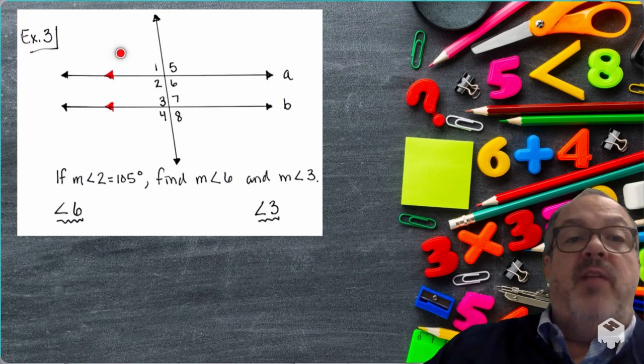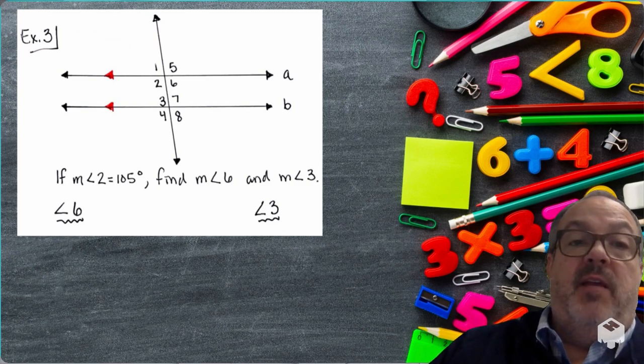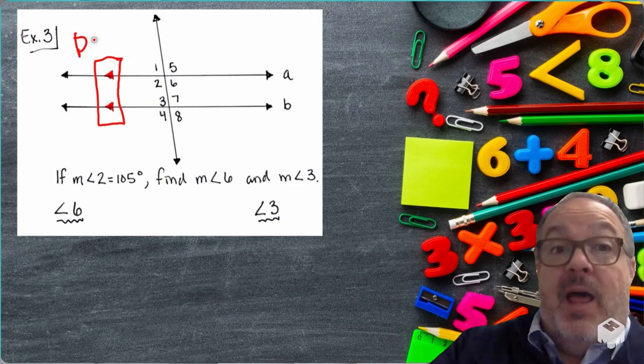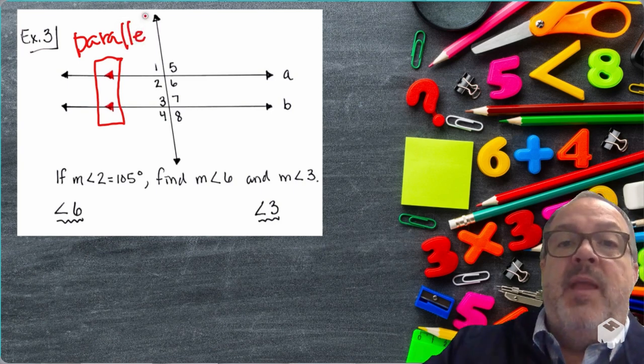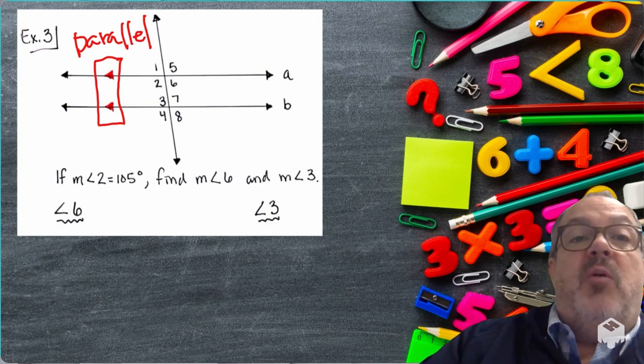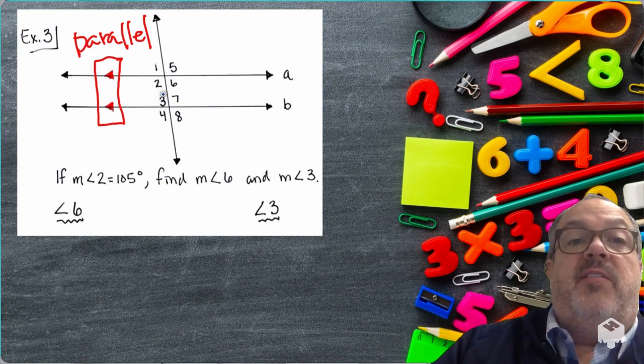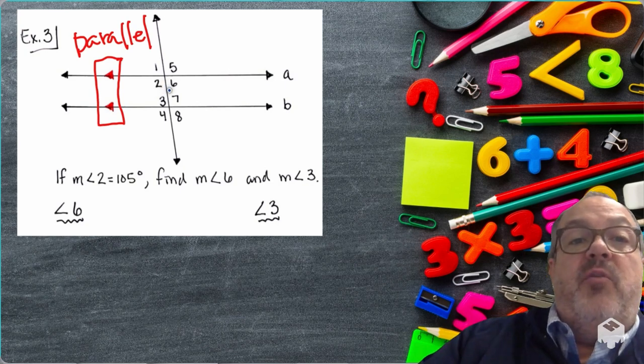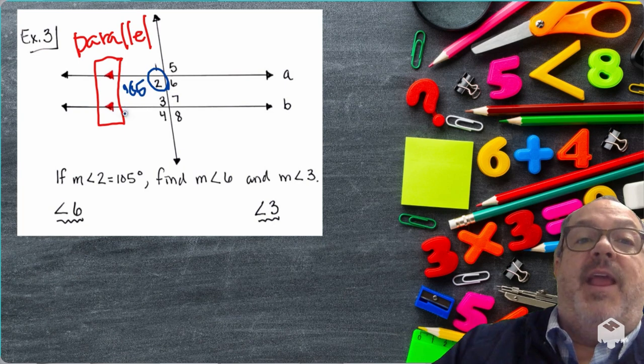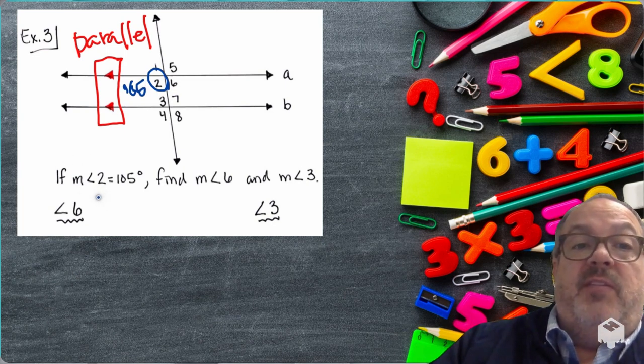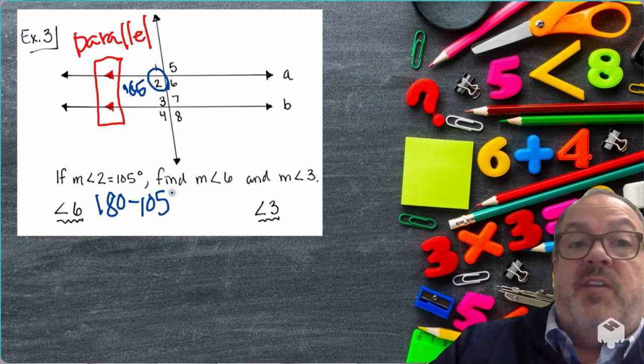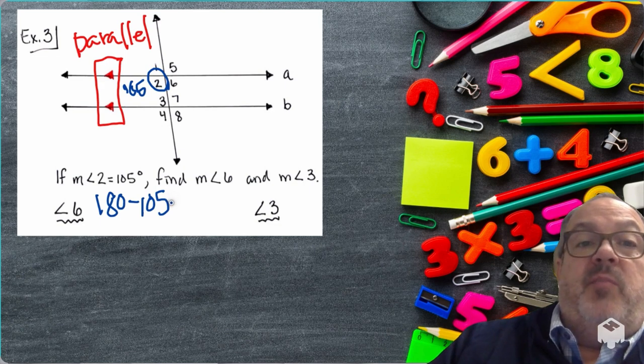In Example 3, we're trying to find out the measurements of Angle 6 and Angle 3. We have the symbols on the lines, those two red arrows. That means that Line A and Line B are parallel to each other. Knowing that is going to be extremely helpful as we solve this problem. We know that Angle 2 is 105 degrees. If Angle 2 is 105 degrees, that means if we add Angle 6 to it, that will give us 180 degrees. So what I need to do is take 180 degrees and subtract 105 degrees from it. That will give me what's remaining, which is Angle 6. So Angle 6 is going to be 75 degrees.